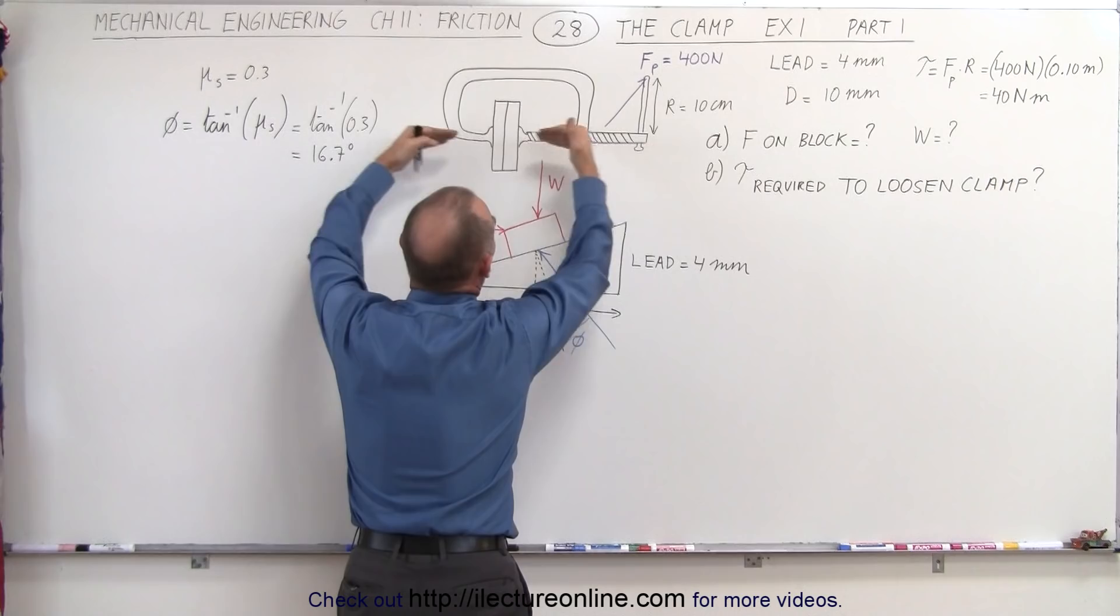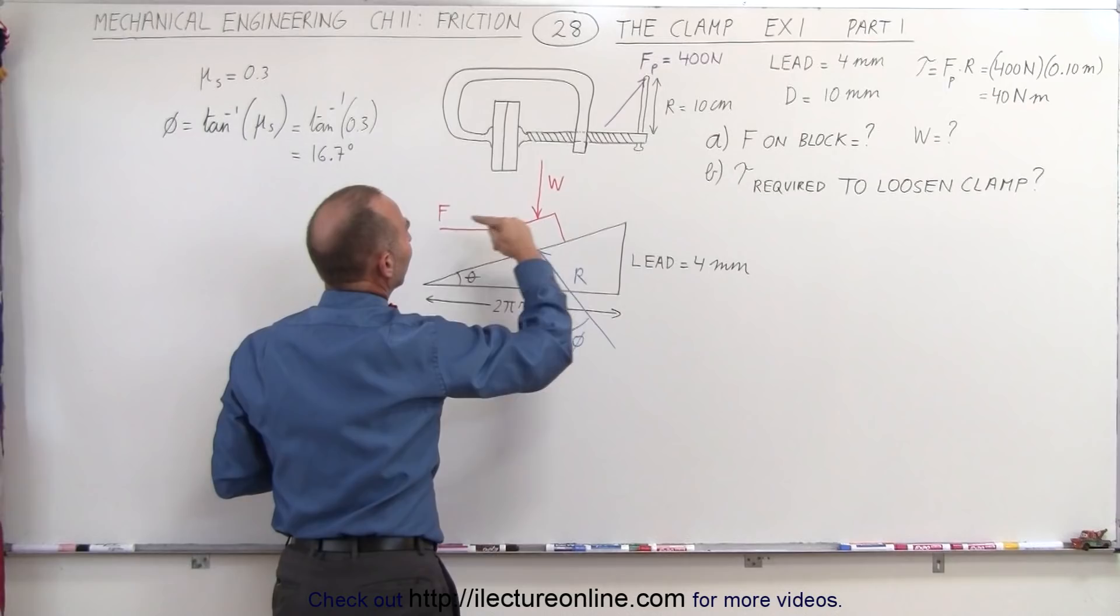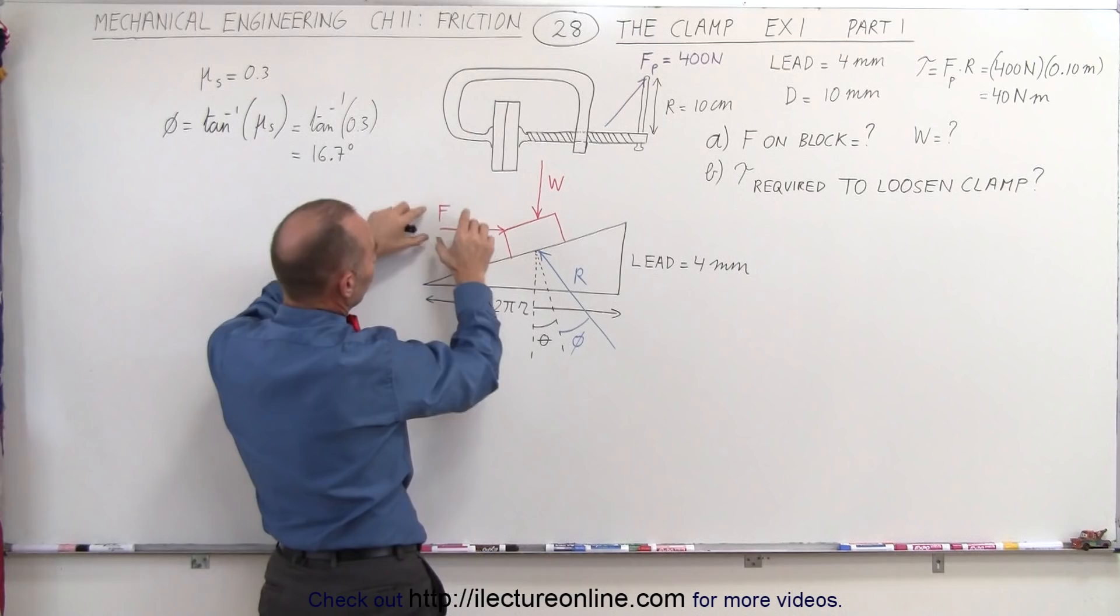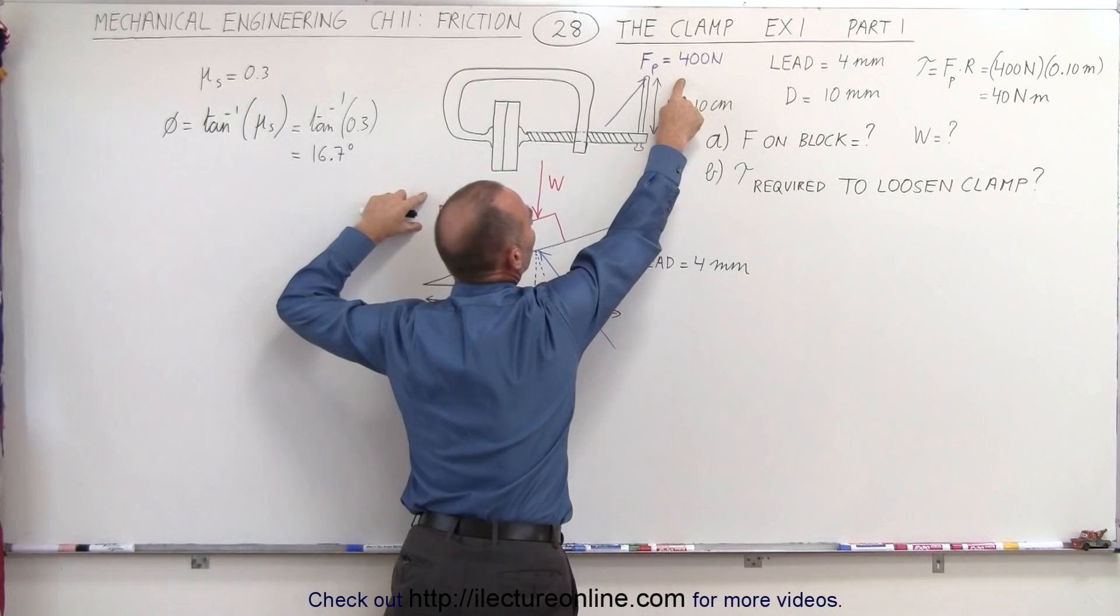The force F is the force applied to the turning of the screw, and of course is a relationship between this force F which is applied to the screw and the moment here, which is 400 newtons applied over a radius of 10 centimeters.